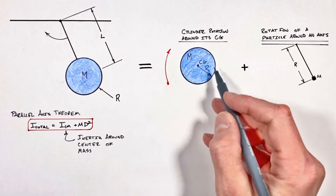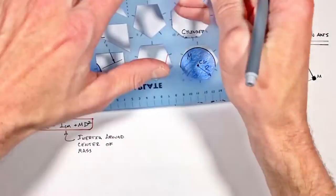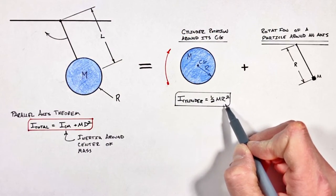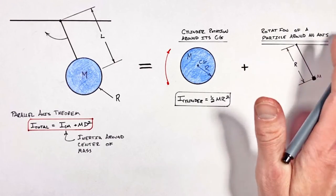Now realize mathematically, the parallel axis theorem is nothing other than the summation of the inertias from these two different rotations. We know the rotational moment of inertia of a cylinder around its center of gravity is given by 1/2 m r²,